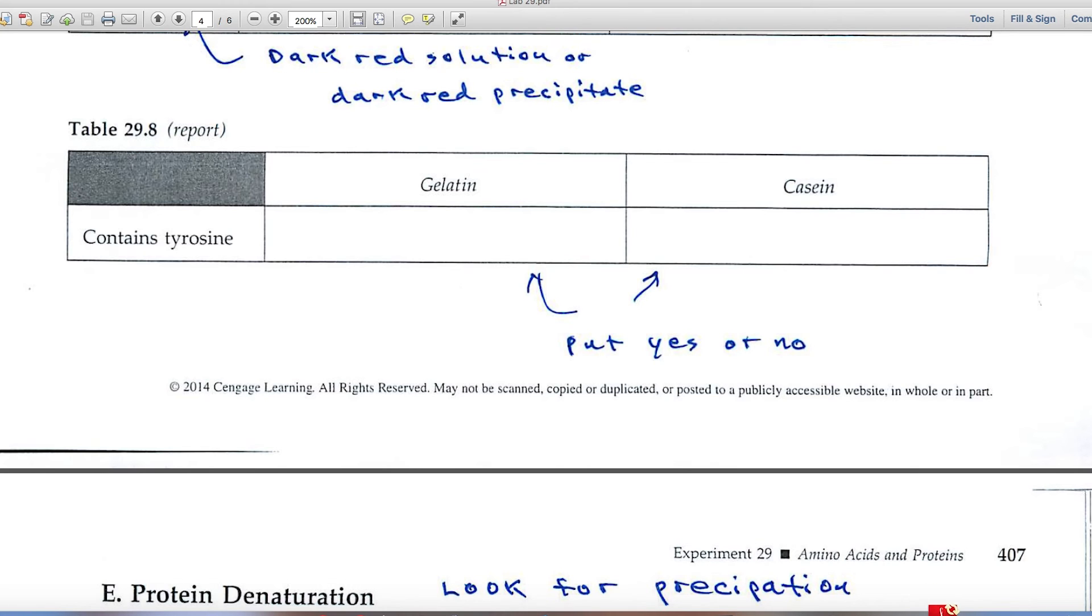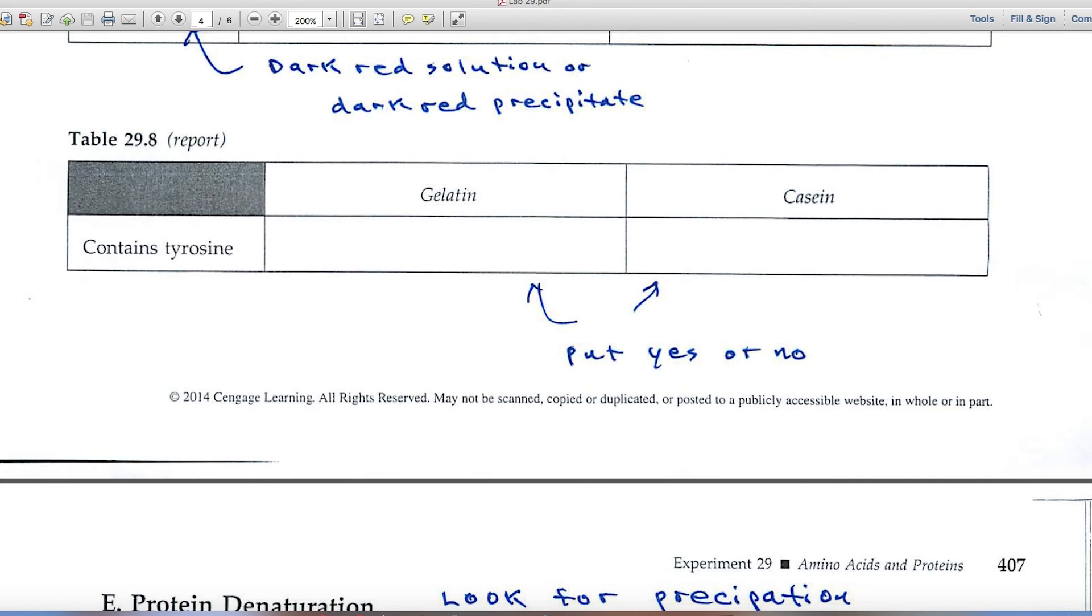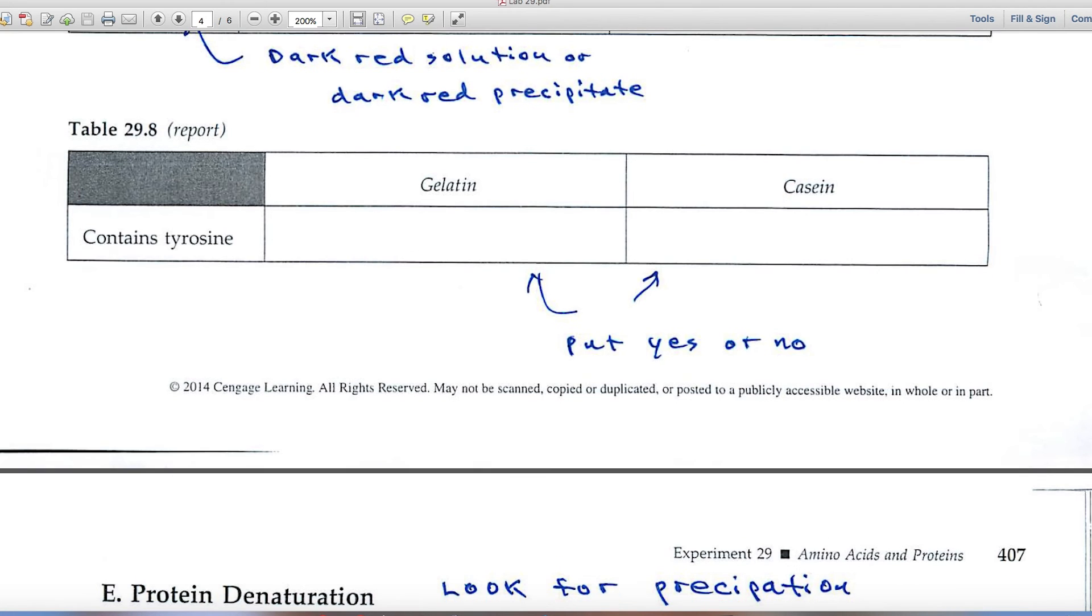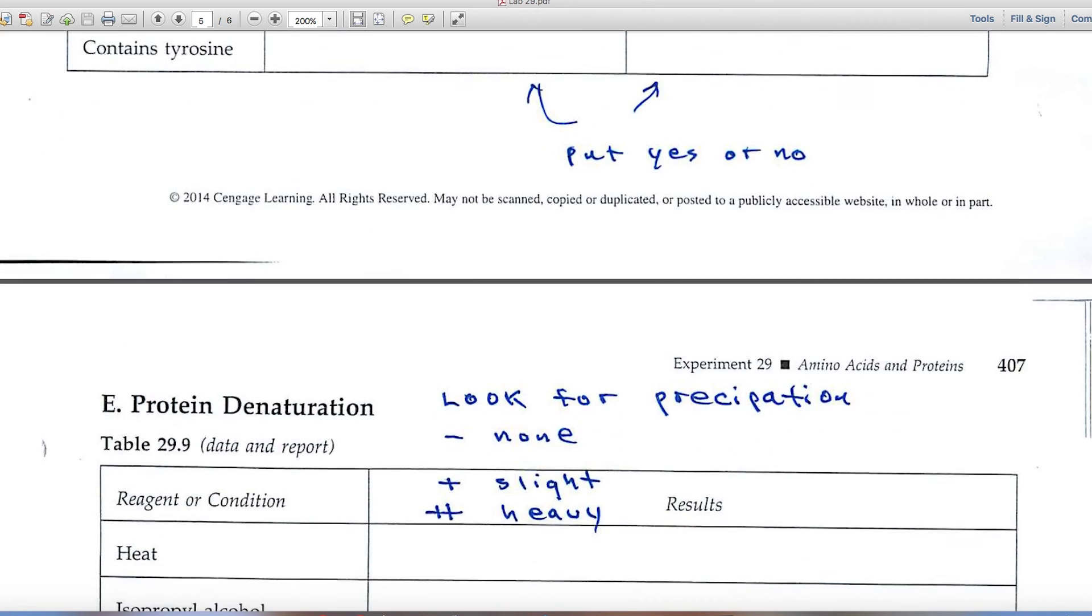And then here's the workup to that last table. Gelatin and casein. And you'll put yes or no on these blanks, depending upon whether or not you've got a positive test for tyrosine.